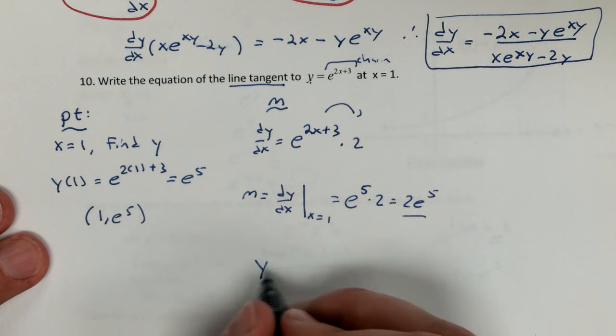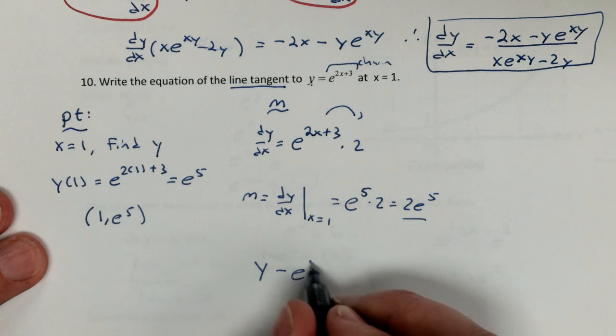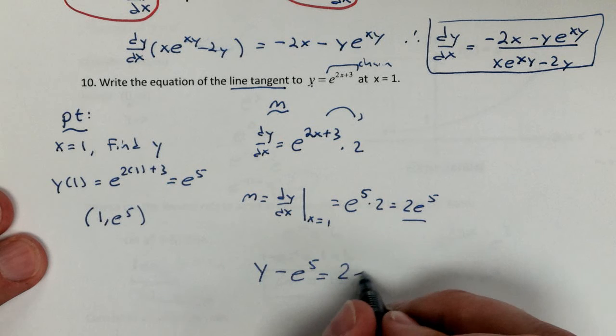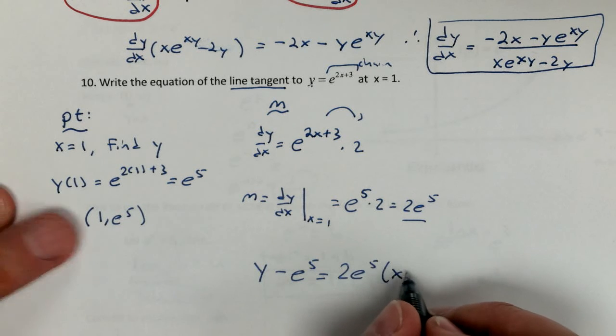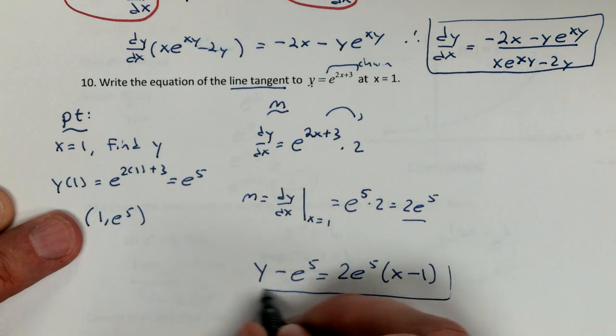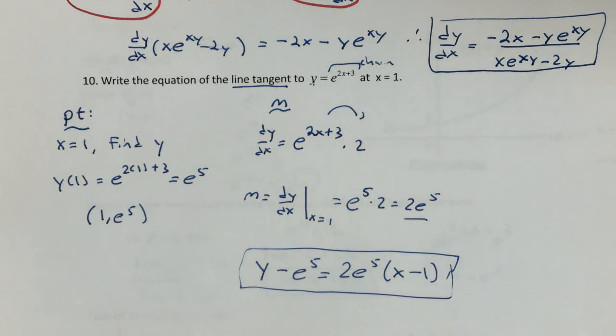Writing your tangent line, y minus e to the 5th equals 2 e to the 5th times x minus 1. And there's our tangent line. Don't simplify that at all. And there we go. There's our answer. Hope you guys enjoyed the video. I know this was a short one. And I'll see you guys next time. Bye-bye.